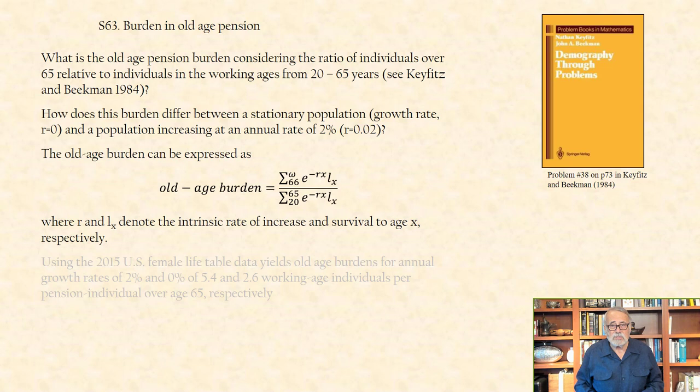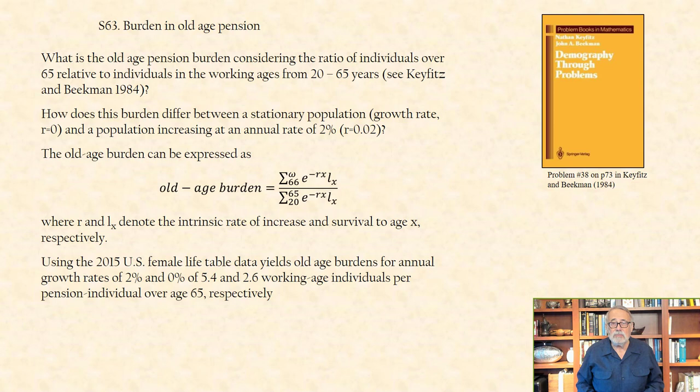Using the 2015 U.S. Female Life Table data yields old age burdens for annual growth rates of 2% and 0%. It corresponds to 5.4 and 2.8 working age individuals per pension individual over age 65, respectively.